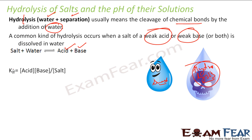For this we use a fancy name called Kh — Kh means hydrolysis constant. It is nothing but concentration of acid times concentration of base divided by concentration of salt. Water is something we ignore because it is a liquid and its concentration is constant — same logic as equilibrium.